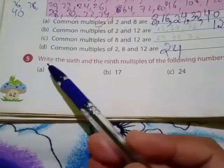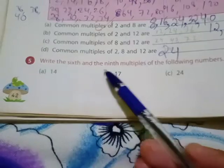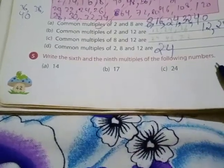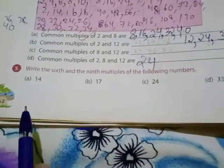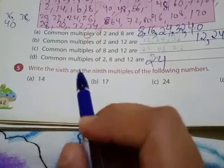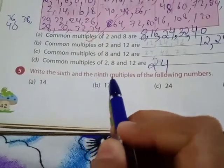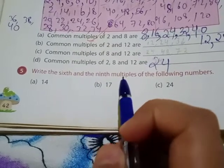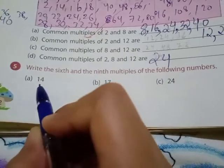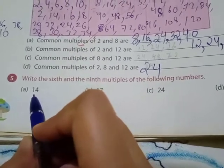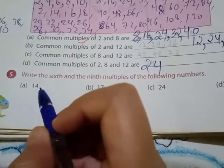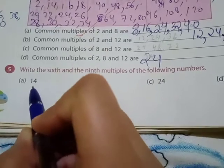Question number 5: Write the sixth and the ninth multiples of the following numbers. Here you can see a few numbers are given. Of these numbers, we have to write sixth and ninth multiples. What does this mean? You have to count the table of 14. Okay, 14 six times, what is the number? That number will be the answer.